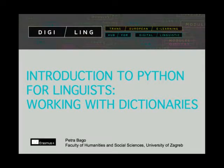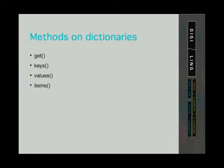What methods can we use on dictionaries? In this video, we are going to mention four methods: Get, Keys, Values, and Items.